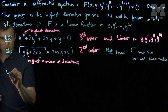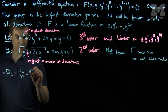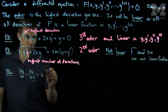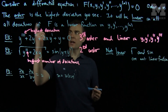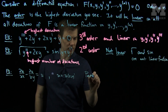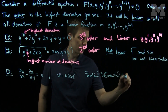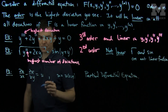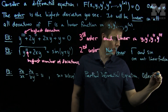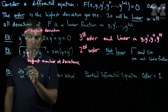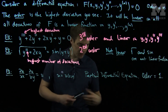Let's consider partial u partial x minus partial u partial y equals u, where u is a function of two variables x and y. As opposed to being an ordinary differential equation, we will say that this is a partial differential equation. This partial differential equation is of order one, since we only have a single partial derivative of u with respect to x, and a single partial derivative of u with respect to y.